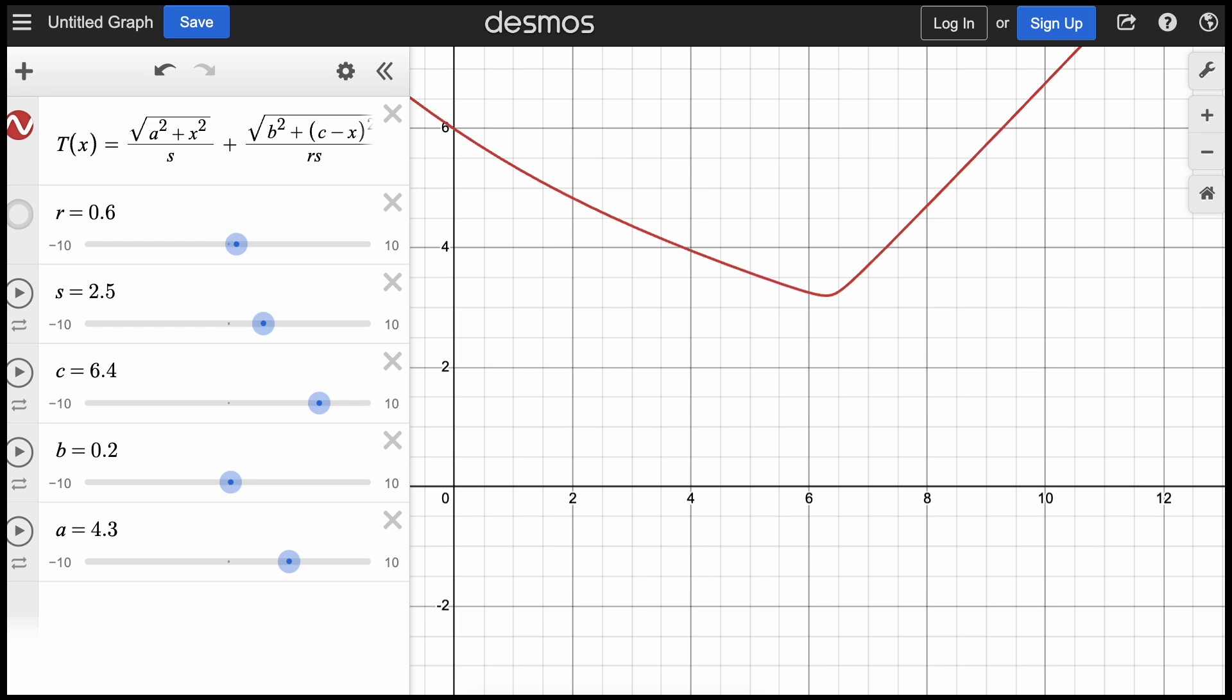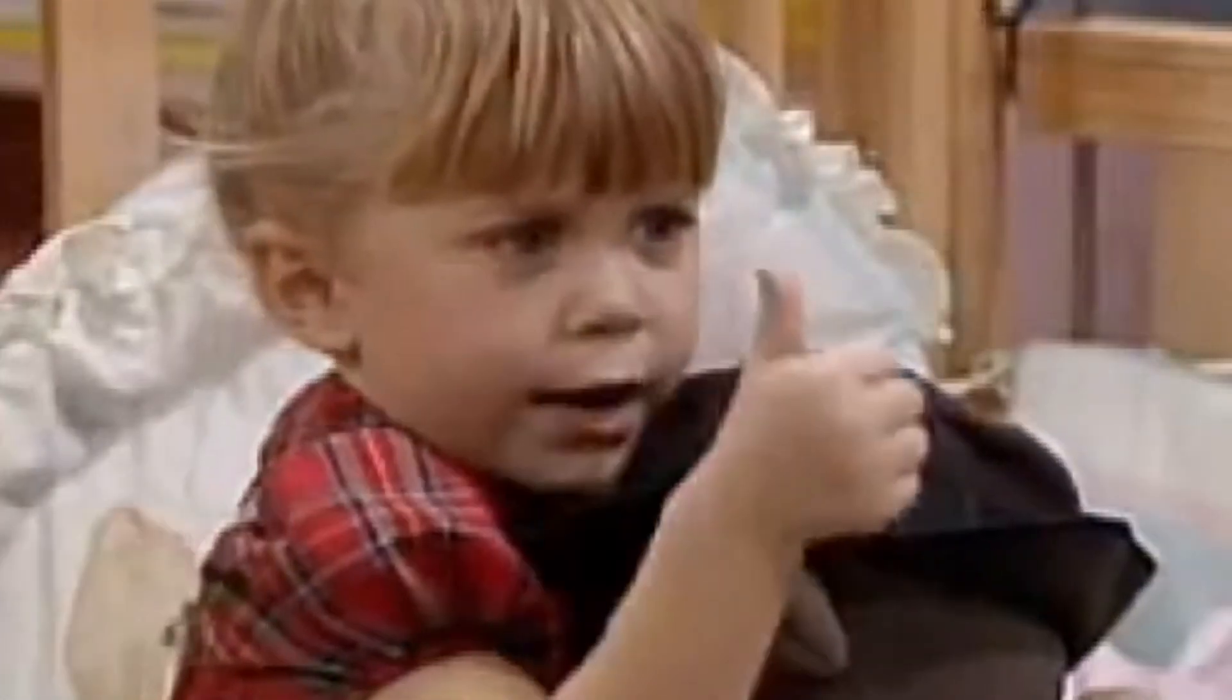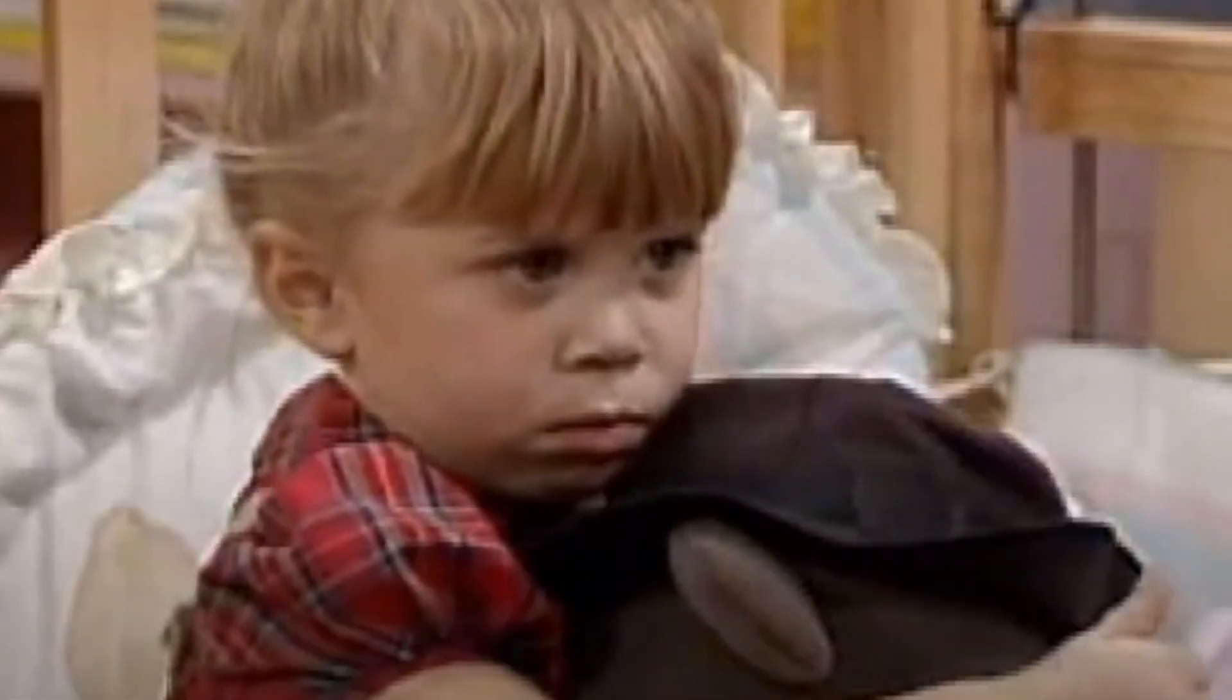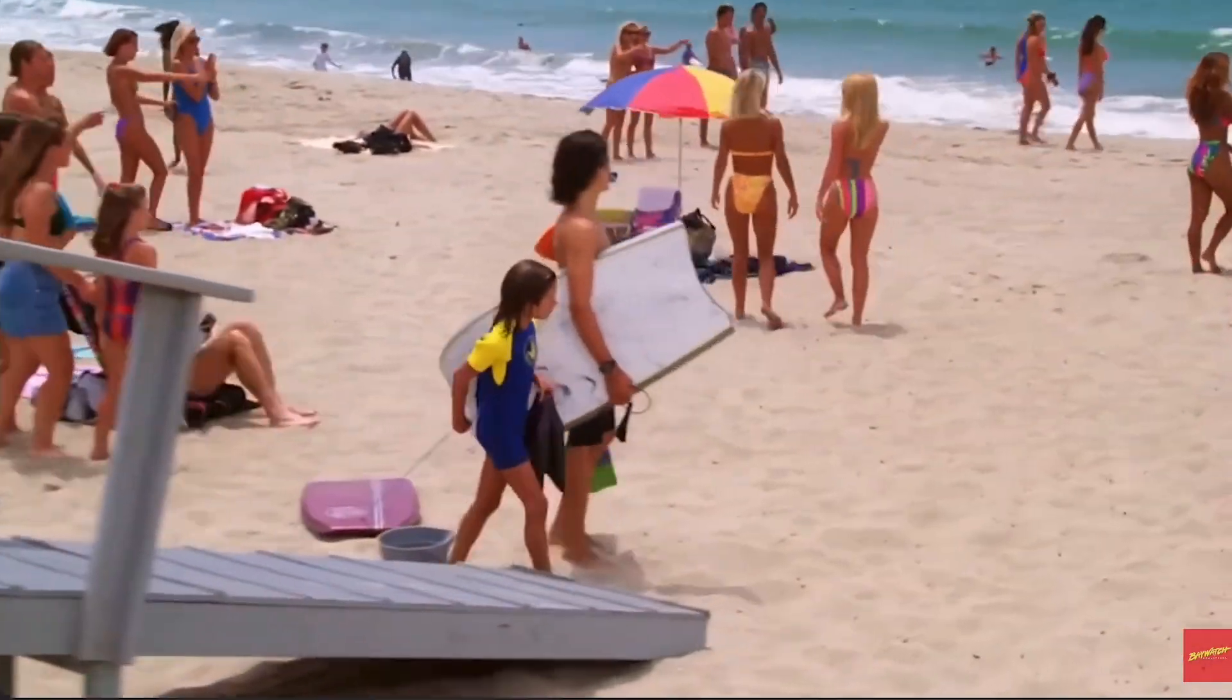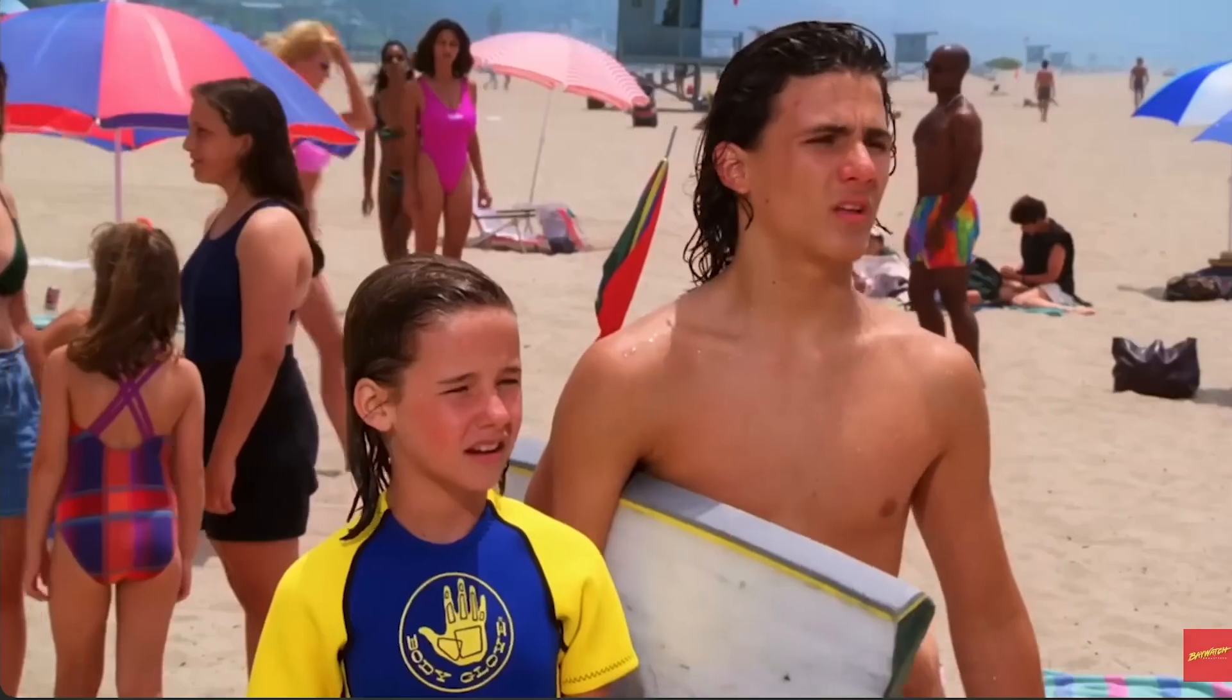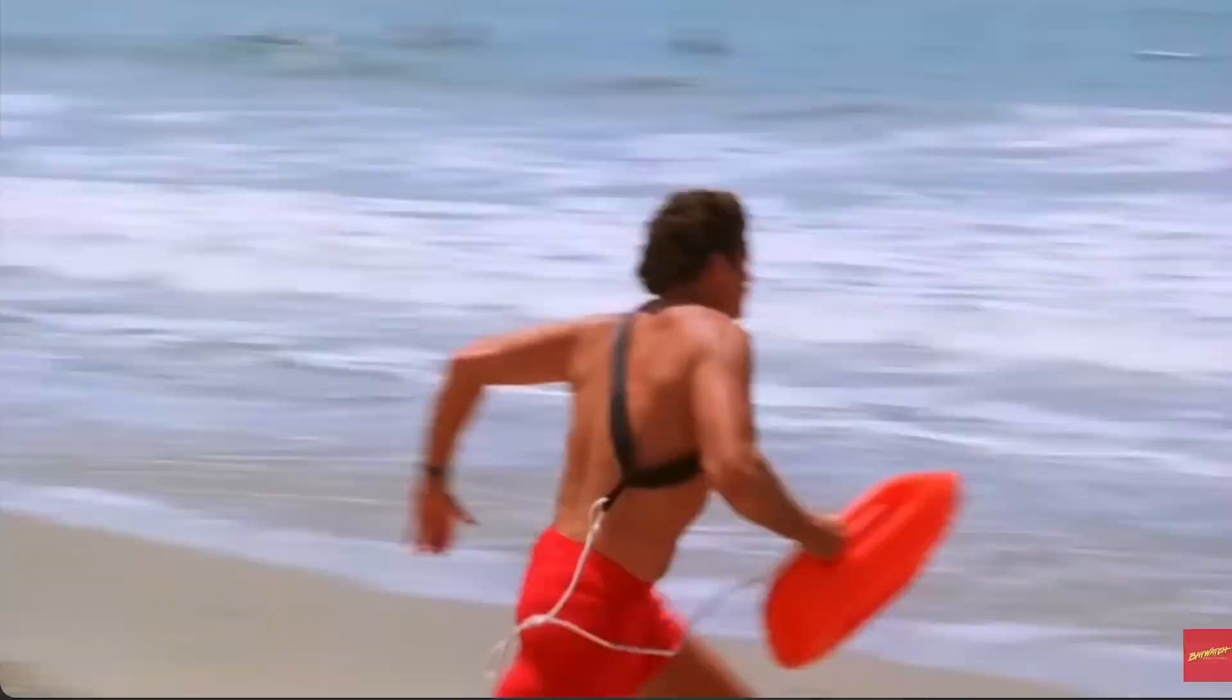Looking back at our graphical model, the equation for time, we see that changing s didn't have any effect on the x value of the graph's minimum, and this will help us later. You can complete the exercise and let your lifeguard friends know you've pretty much given them the secret to saving lives. I did hear that some researchers did studies to see how close lifeguards naturally go to the optimal path, and lucky for the poor swimmers, they get pretty close even without training.